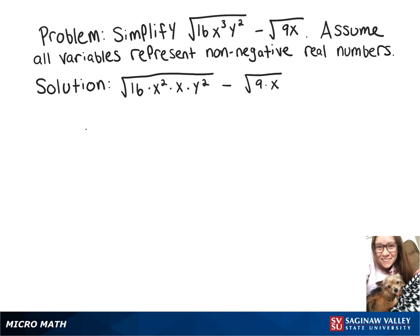Now going back to our first part, the square root of 16 you know is 4. And then you've got the square root of x squared, so the square root and the square are going to cancel out, so that leaves us with just x. Same thing with the y, and then you've got a square root of x left.